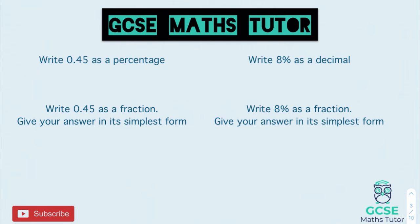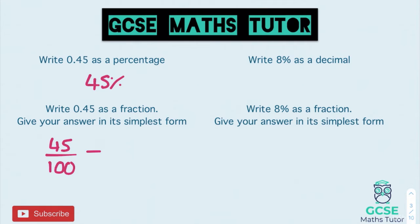There are two practice questions — pause the video, have a go, and we'll go over the answers. For the first one: 0.45 as a percentage — times by 100 gives 45%. Writing that as a fraction is 45 over 100, and they both divide by 5. 45 divided by 5 is 9, and 100 divided by 5 is 20, and they don't divide by anything else. So the final answer is 9 over 20. So 45% and 9 over 20 are the answers for the first question.